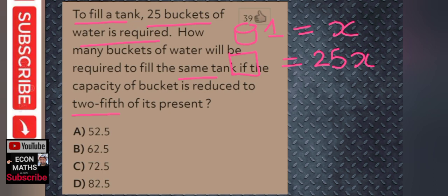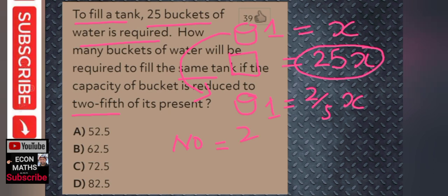25 buckets fill the tank completely, so the capacity of the tank is 25x. The question says the bucket size has been reduced — the new bucket size is equal to two-fifths of the original, that is (2/5)x. The number of buckets required will be equal to the capacity of the tank, which is 25x, divided by the new capacity which is (2/5)x.